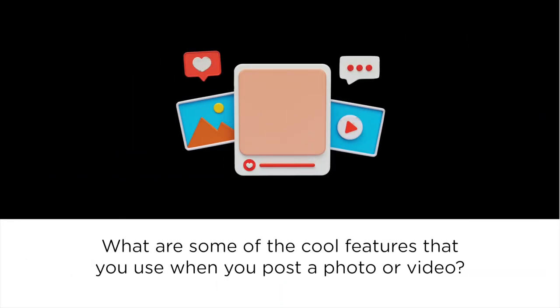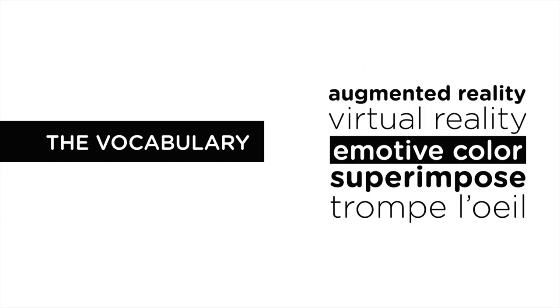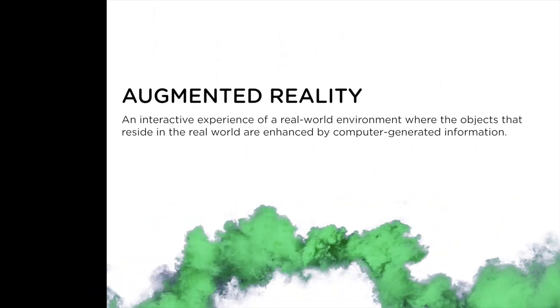How many of you use social media? What are some of the coolest features that you used when you posted a photo or video? What are these features called? When filters and lenses are used, it is what we call augmented reality. Augmented reality, AR, is an interactive experience in a real-world environment where the objects that reside in the real world are enhanced by computer generated information.